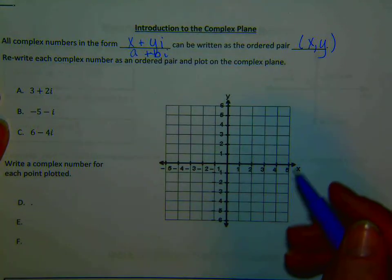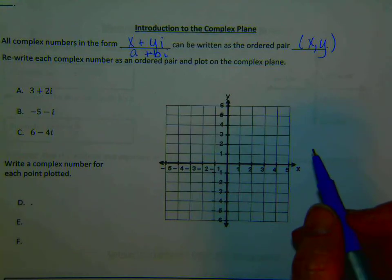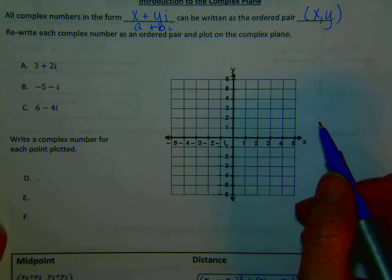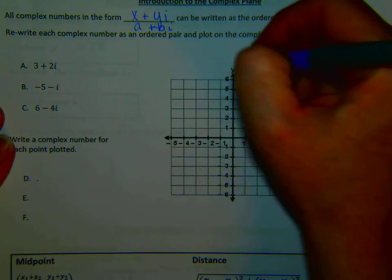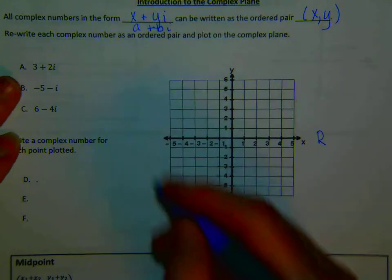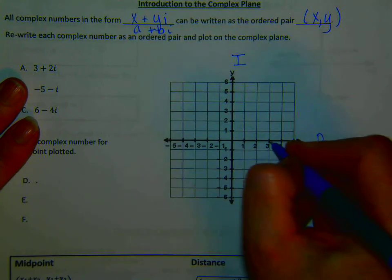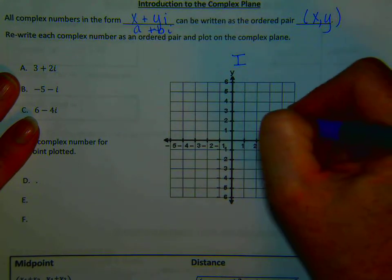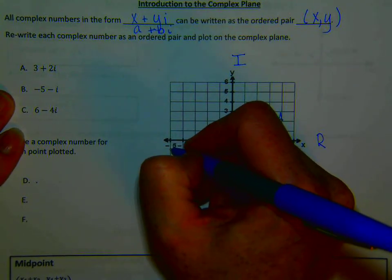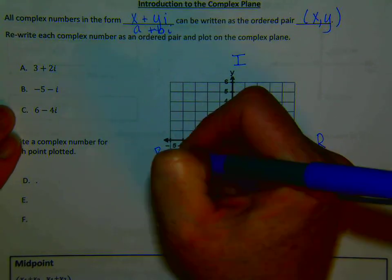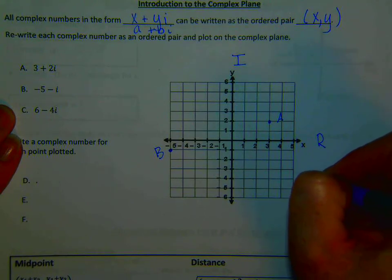We're going to take these examples and graph them. We have 3 plus 2i - we graph them just as we would a regular coordinate point, where 3 goes along what we call the real axis, and 2 goes along the imaginary axis. So (3, 2i) is point A. Point B is negative 5, negative i. And C is positive 6, negative 4.